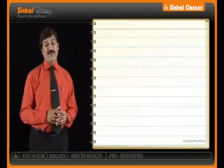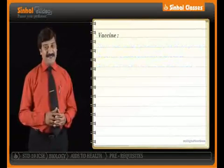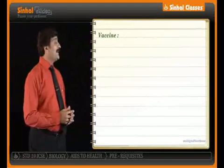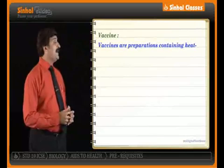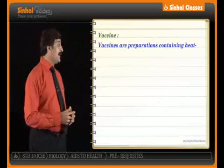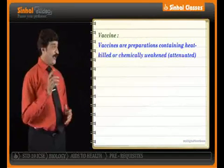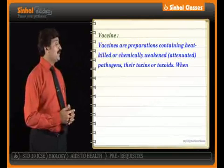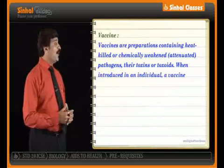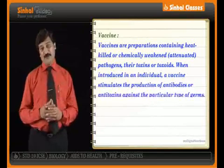That brings us to a very important definition: what is a vaccine? Vaccines are preparations which contain heat-killed or chemically weakened pathogens, their toxin or toxoid. When introduced to an individual, a vaccine stimulates the production of antibodies or anti-toxins against the particular type of germs.